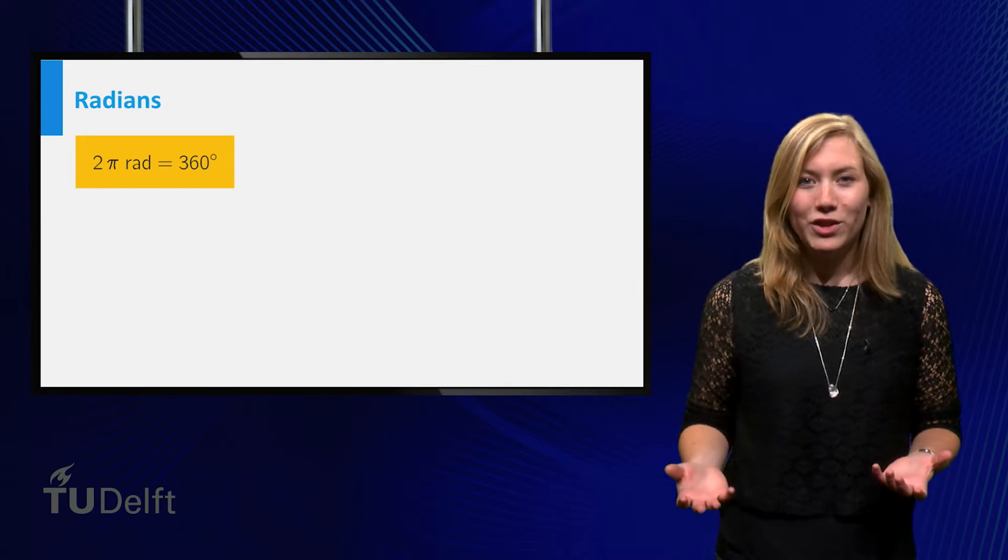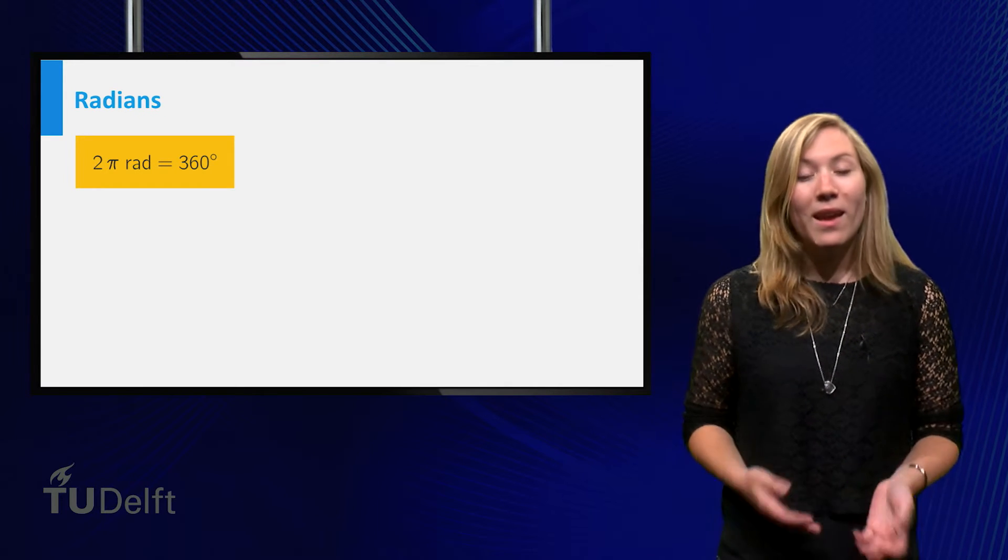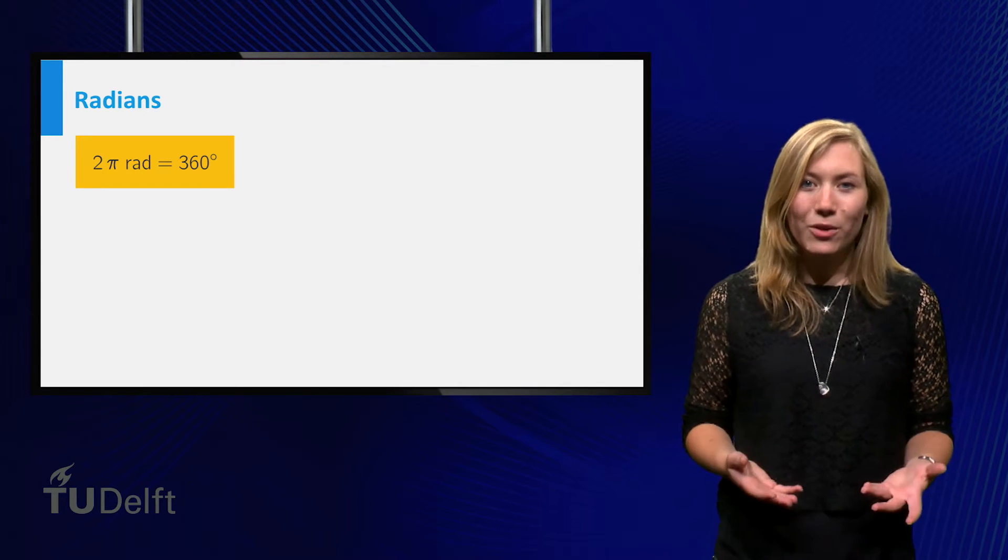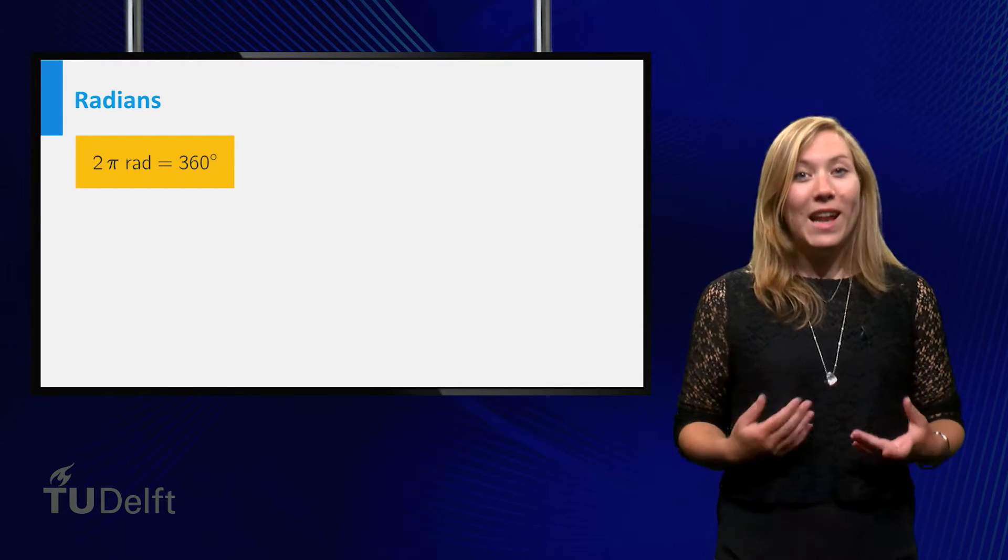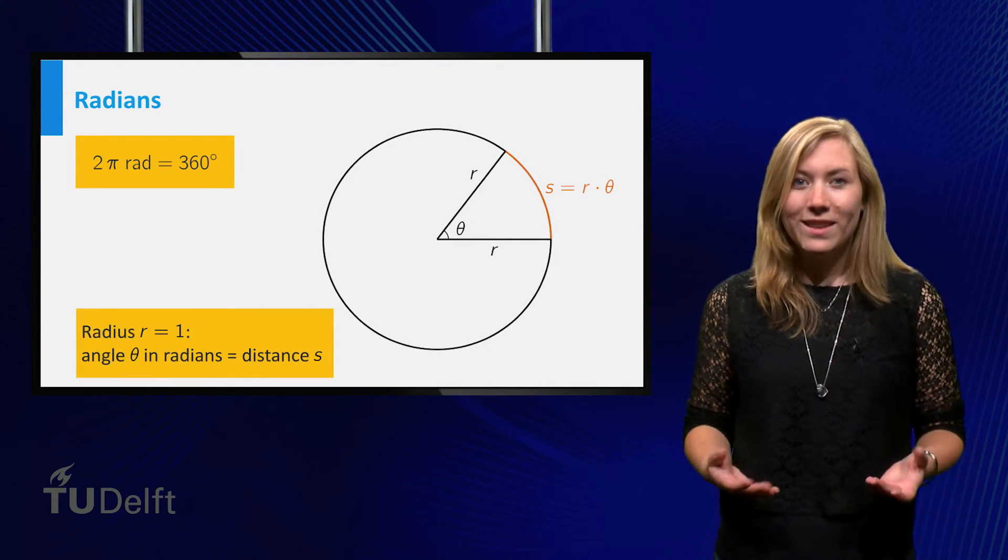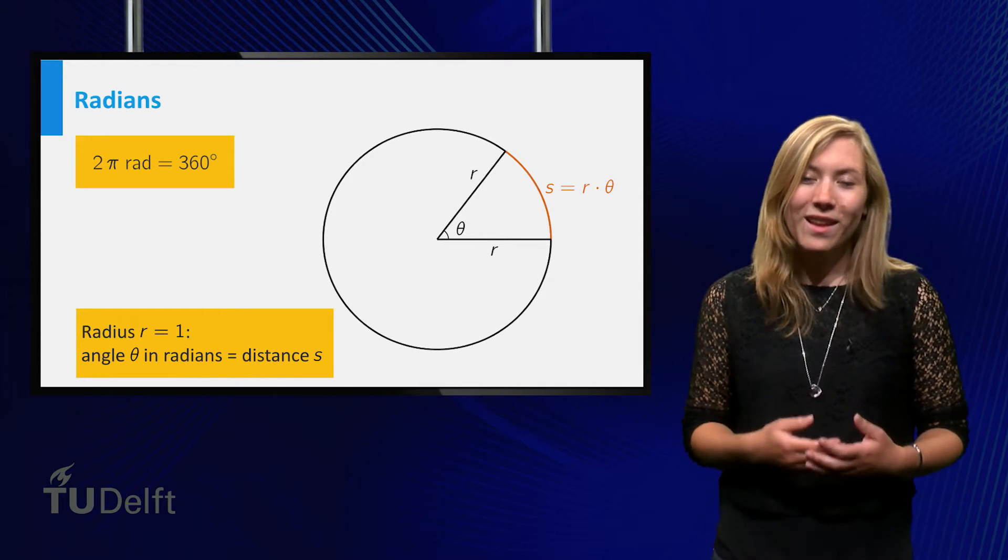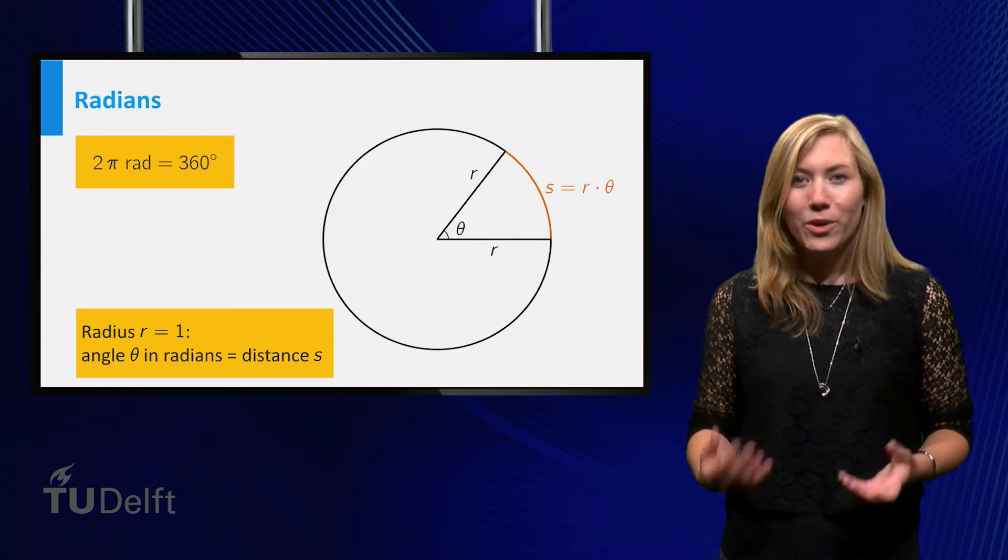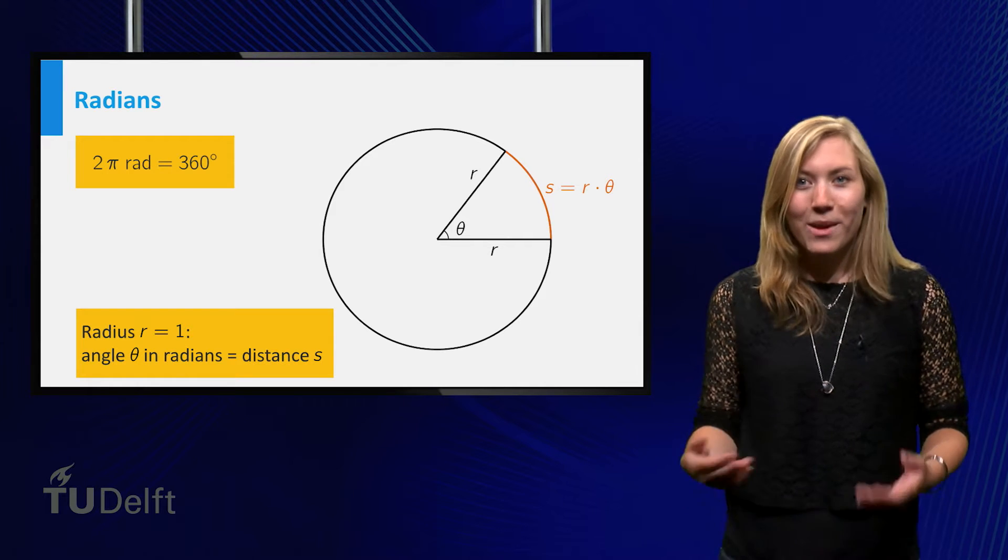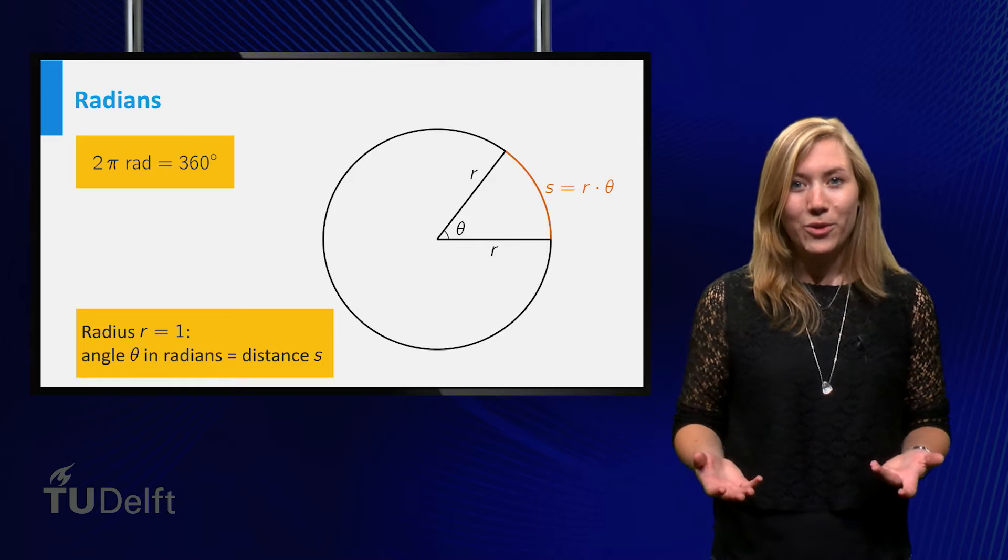Remember that the inputs of these functions are typically angles, and that in calculus we measure angles in radians. The length s of an arc of angle theta equals the radius of a circle times theta. Thus, a full circle is 2 pi radians, because that is the circumference of the unit circle.